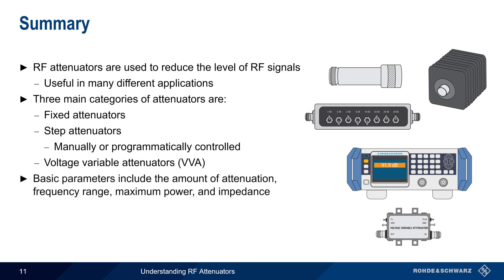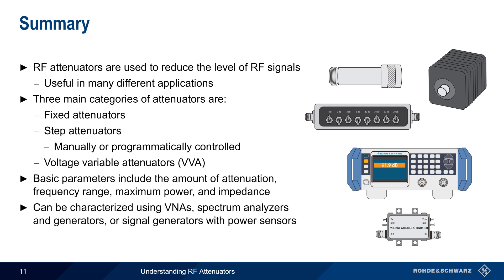All three types of attenuators can be characterized in terms of basic parameters such as the level of attenuation, the frequency range over which attenuation level is effectively constant, and the input and output impedance of the attenuator, though other characteristics apply to some attenuator types. Attenuators can be characterized using vector network analyzers, signal generators, spectrum analyzers, or power sensors to measure attenuator performance.